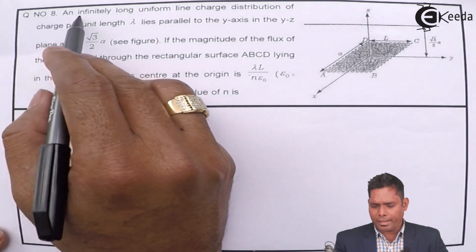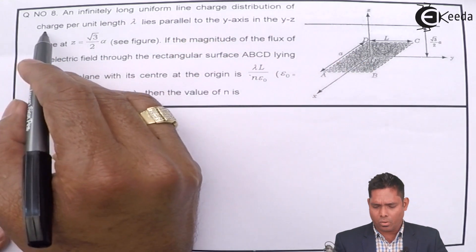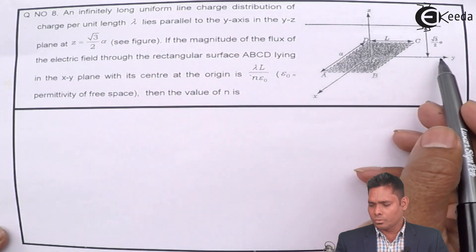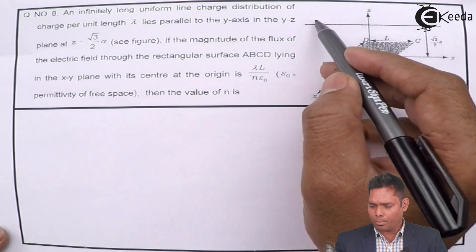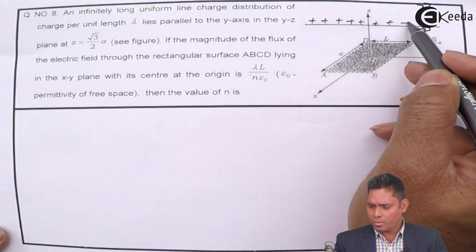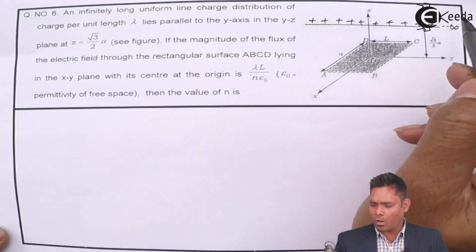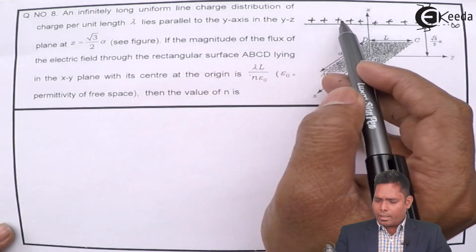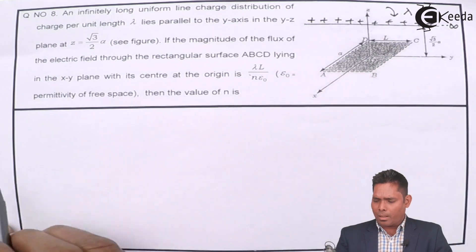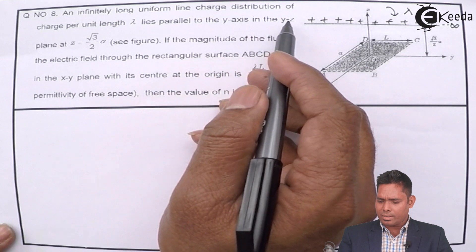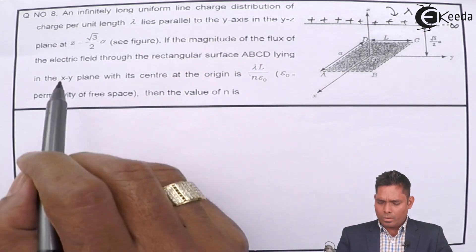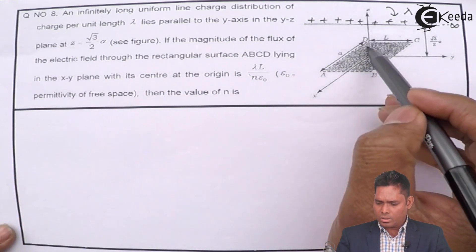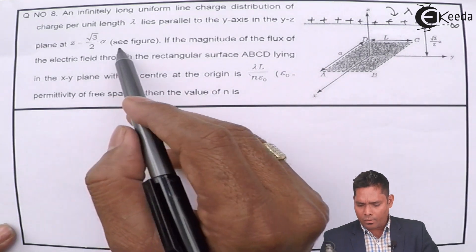Question number 8 states: an infinitely long uniform line charge distribution of charge per unit length lambda lies parallel to the y-axis in the y-z plane at a distance of root 3 upon 2 · a, as shown in the figure.